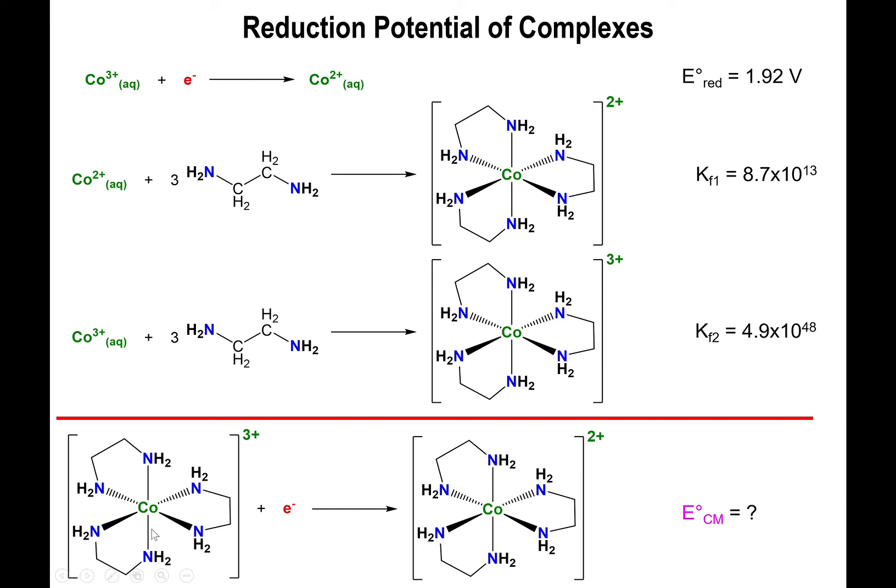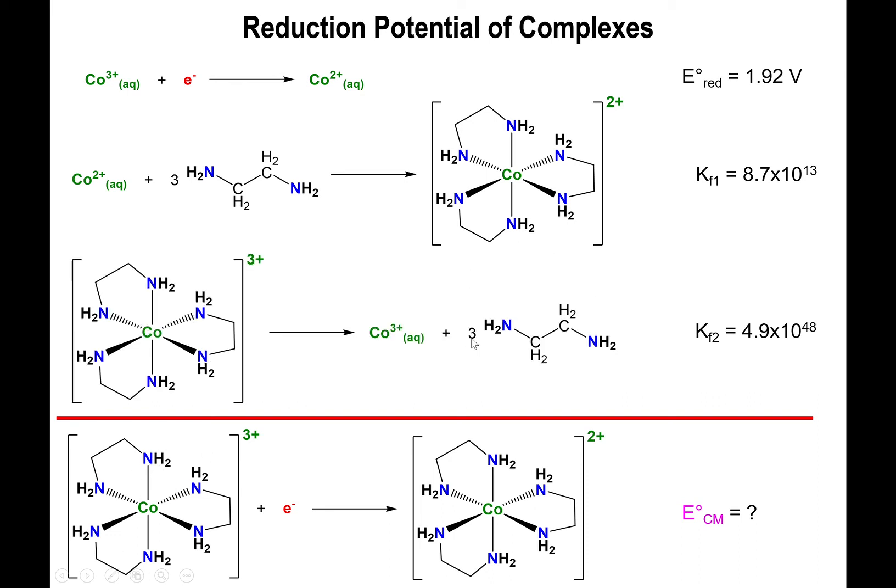We are undergoing a reduction, so we keep the cobalt 3+ to cobalt 2+ the way it is. But as a reactant, we have the cobalt 3+ complex. So we need to take this third equation and flip it. And the moment you flip that equation, you raise the equilibrium constant to the negative one power. Other than that, the cobalt 2+ complex is exactly where we want it. We have the electron where we want it. So we can now add these equations together.